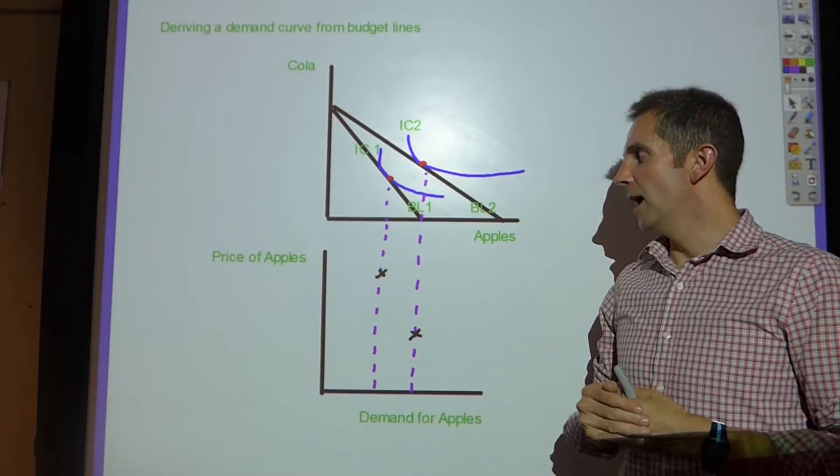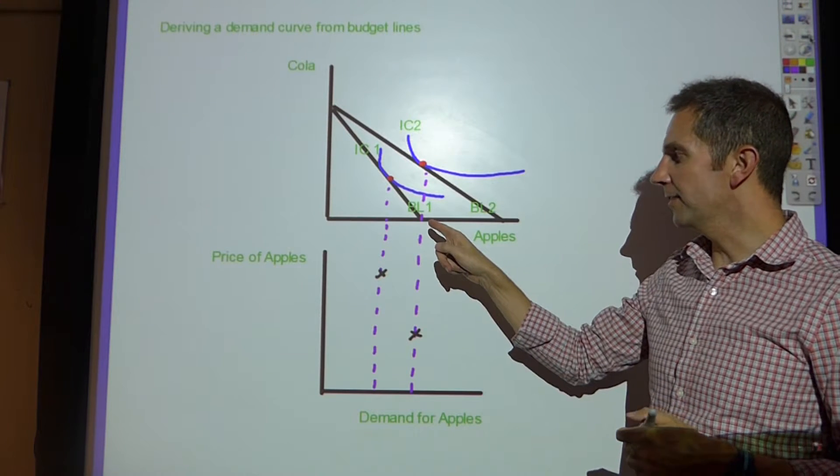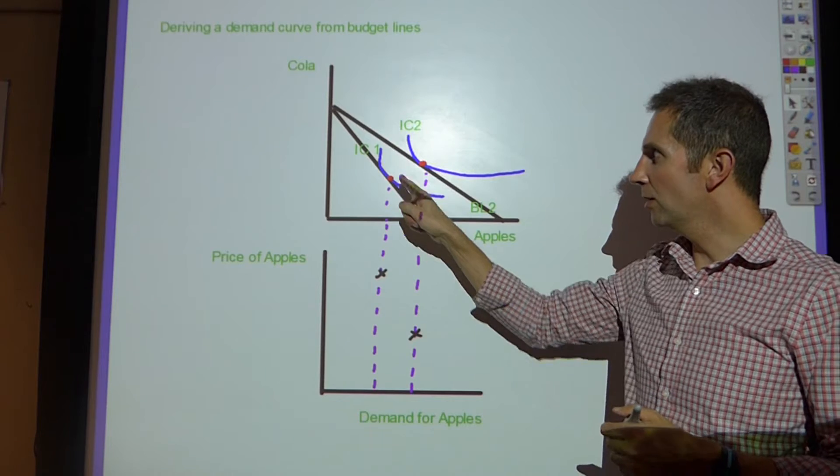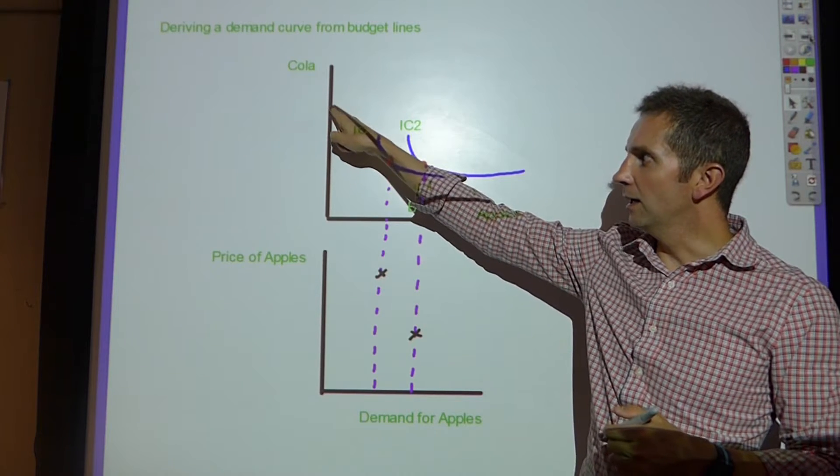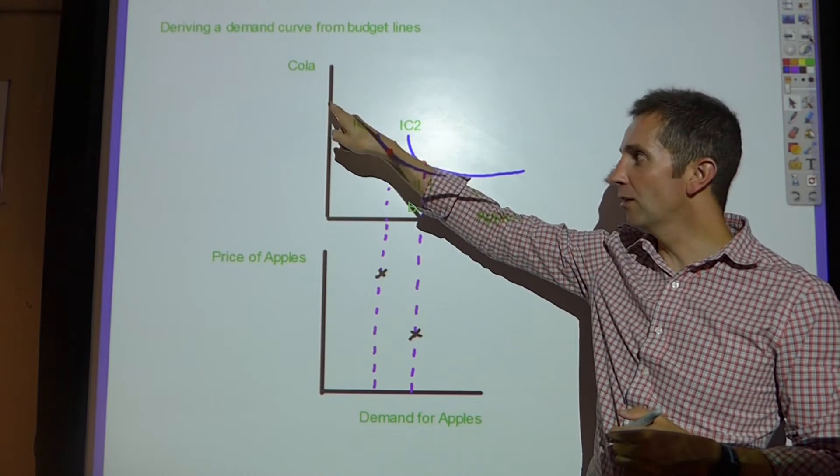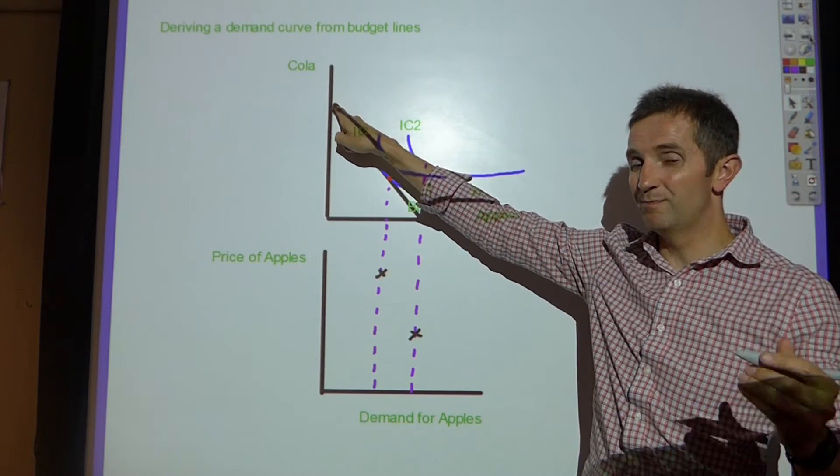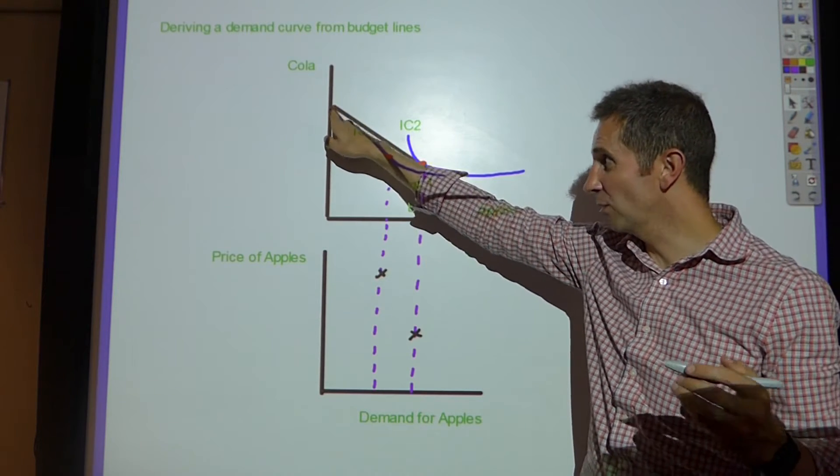And you can see clearly that there has been a reduction in the price of apples because the budget lines are pivoting around this point to indicate that cola maximum potential consumption remains constant.